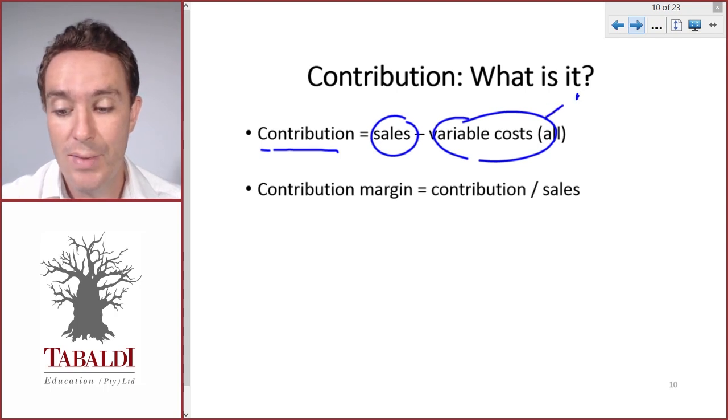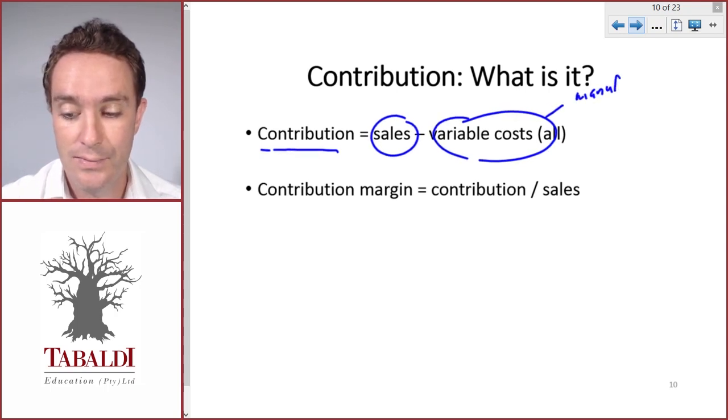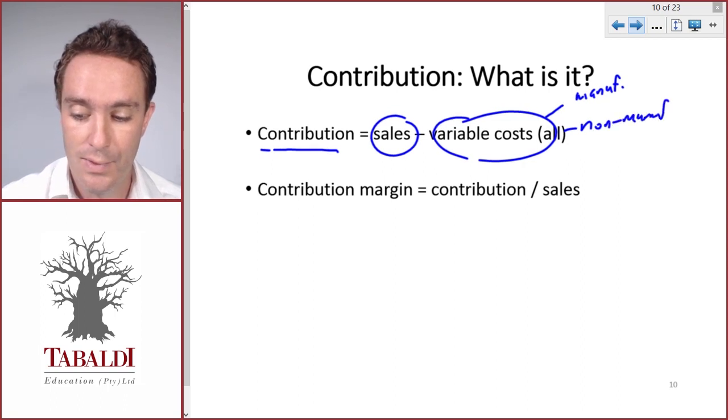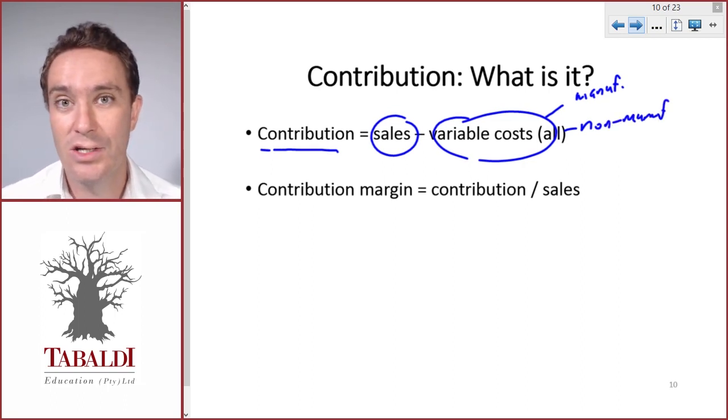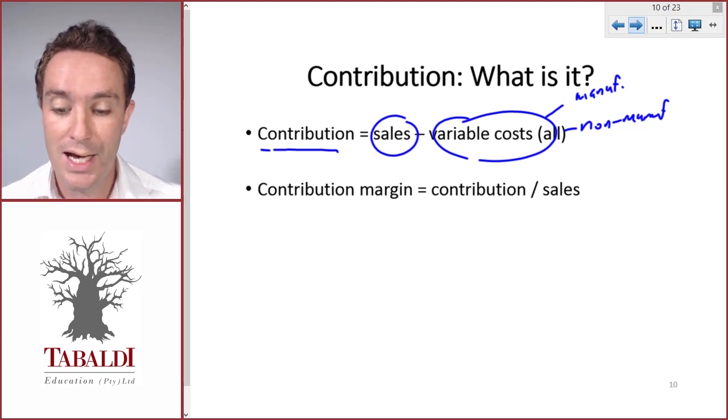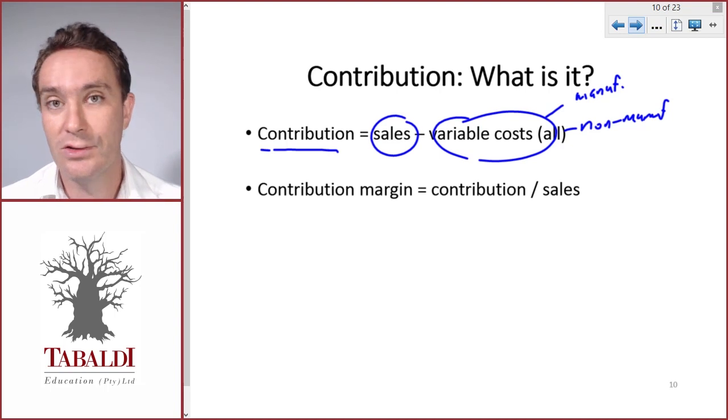Variable costs include manufacturing costs and non-manufacturing costs. We need to classify costs based on their behavior and then split them between variable and fixed. When we deduct our variable costs from our sales, we get contribution.